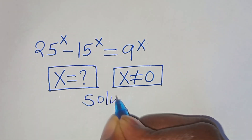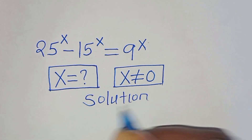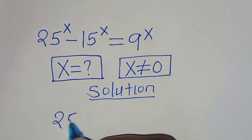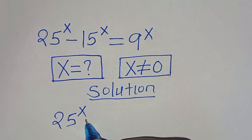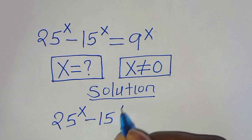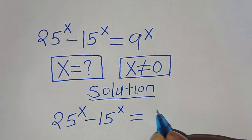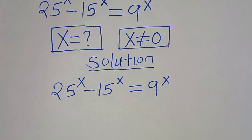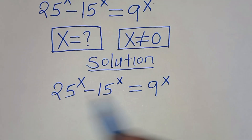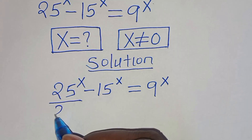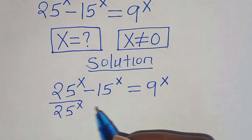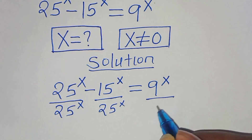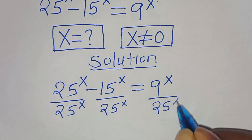Let's present a solution from here. Given that 25 to the power of x subtract 15 to the power of x equals 9 to the power of x. The first step is to divide both sides by 25 to the power of x. So here we have 25 to the power of x on both terms.